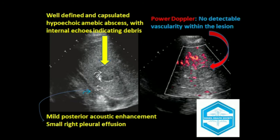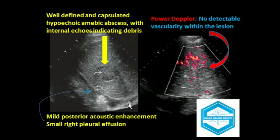This is another well-defined, encapsulated hypoechoic amoebic abscess with internal echoes and debris. Most importantly in this image is a small right-sided pleural effusion. By application of power Doppler, it is revealed that the lesion does not show vascularity.